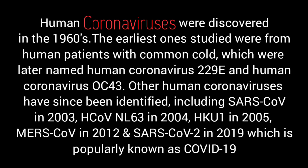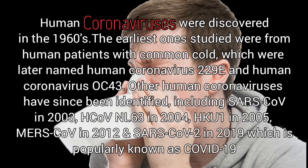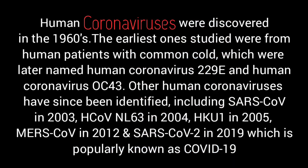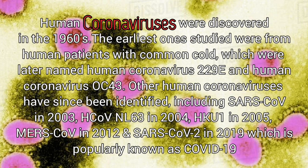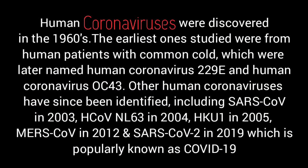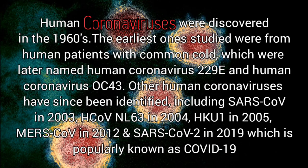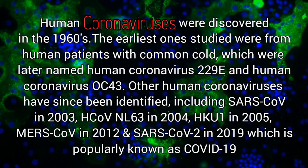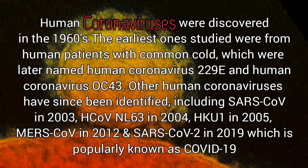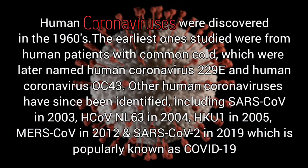The earliest ones studied were from human patients with the common cold, which were later named human coronavirus 229E and human coronavirus OC43. Other human coronaviruses have since been identified, including SARS-CoV in 2003, HCoV-NL63 in 2004, HKU1 in 2005, MERS-CoV in 2012, and SARS-CoV-2 in 2019, popularly known as COVID-19.